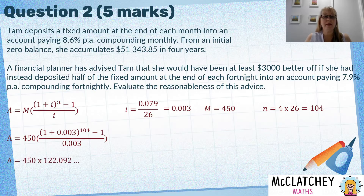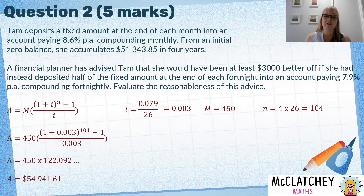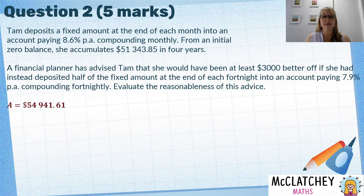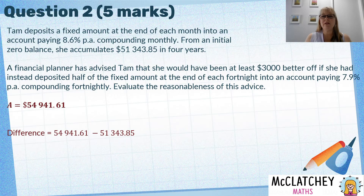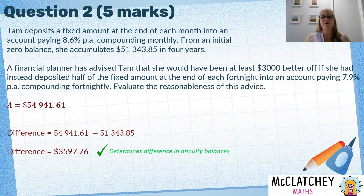So now we're substituting into our formula — correct substitution again. Working that out, $450 times the relevant factor of 122 gives us $54,941.61. We're not finished yet — we've worked out what she would have had if she'd followed the financial planner's advice, but we need to find the difference between what she earned and what she got. We earn another mark for working that out.